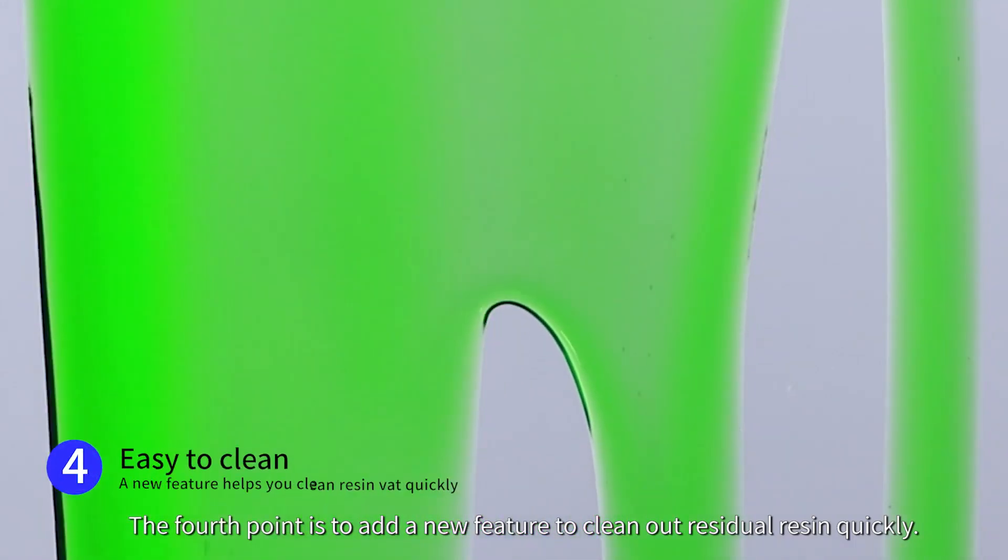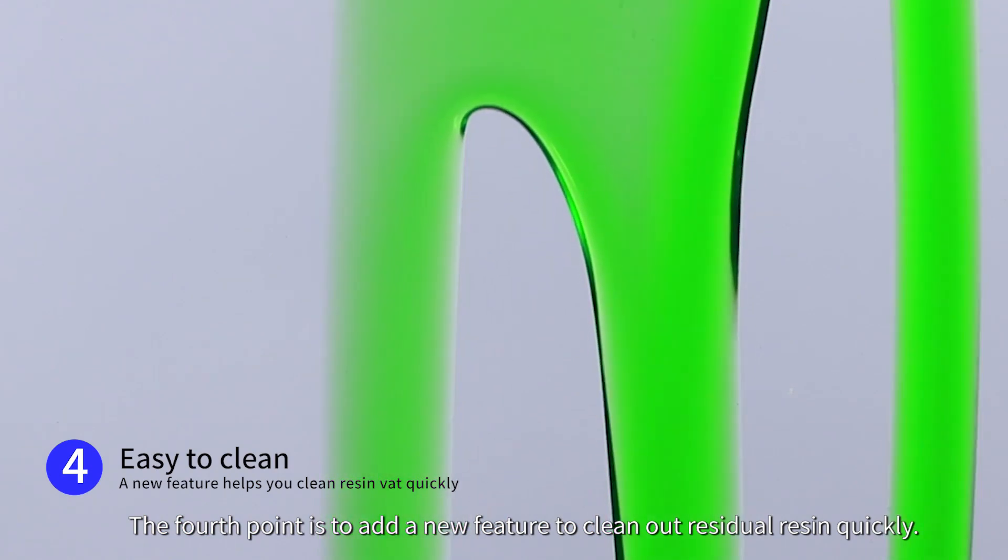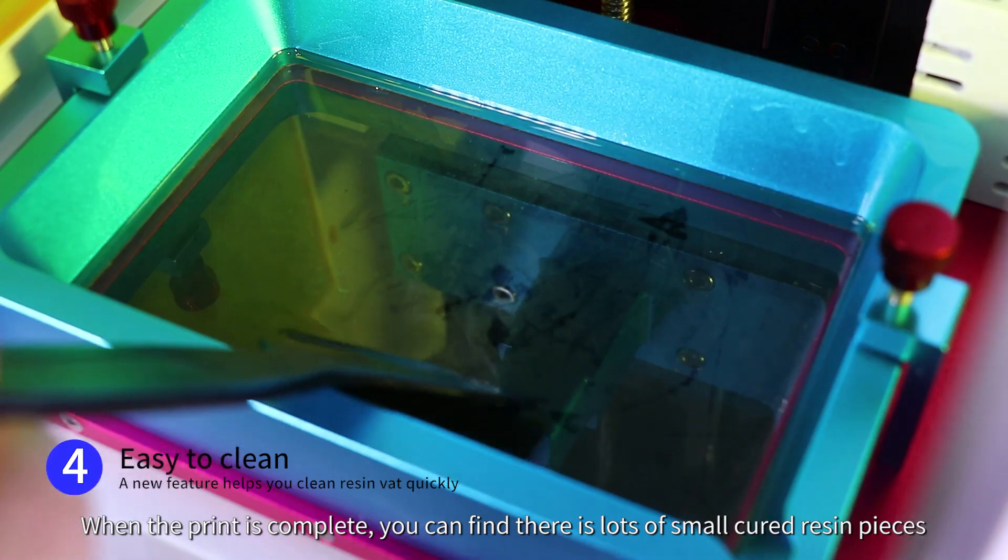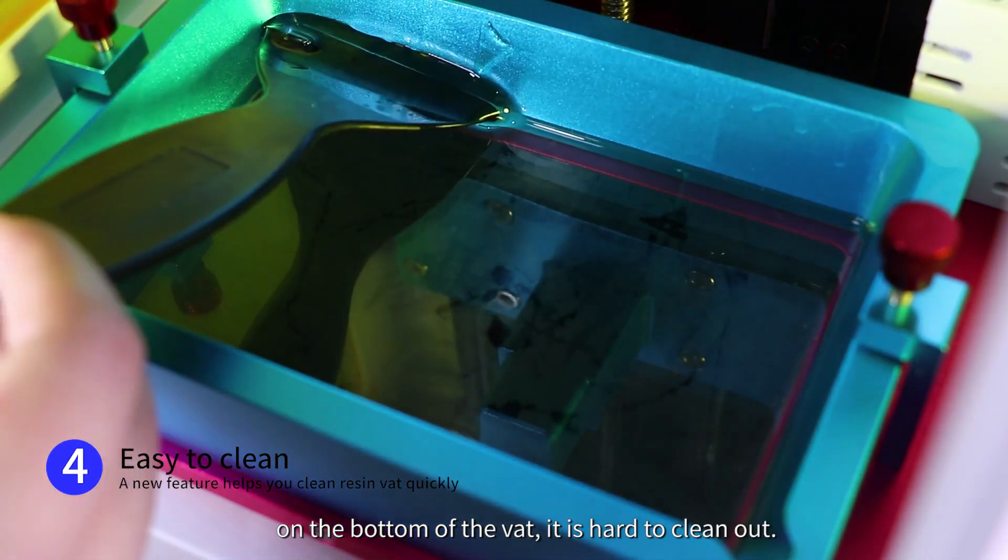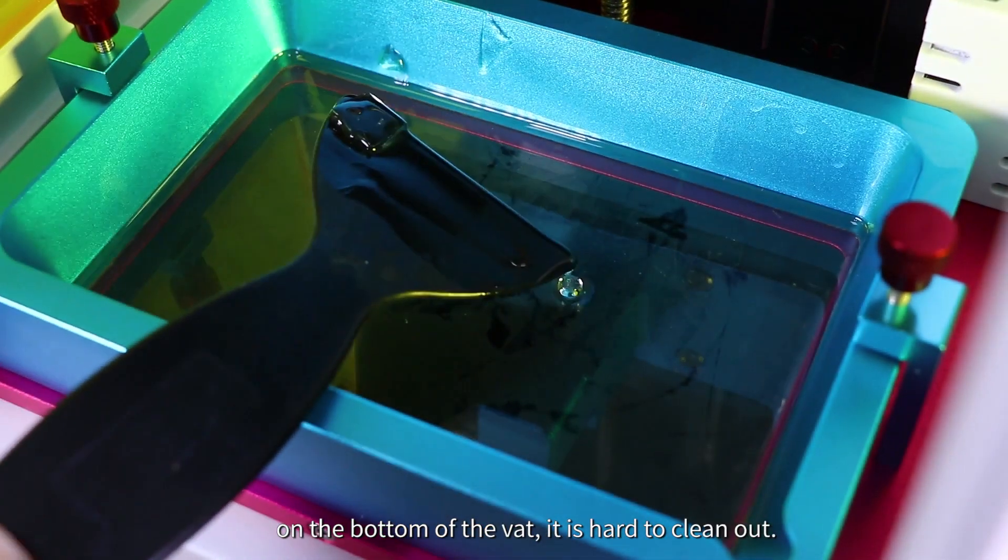The fourth point is to add a new feature to clean out residue resin quickly. When the print is complete, you can find there's lots of small cured resin pieces on the bottom of the vat. It is hard to clean out.